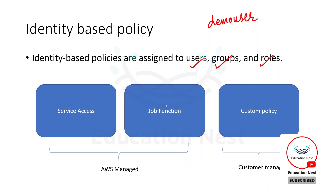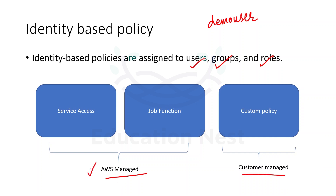We have two types of identity-based policies: customer managed and AWS managed. When we have AWS managed policies, we have two types: service access or job function. Service access policies are created on a specific service basis — like if you want to give EC2 full access, that would be under service access.